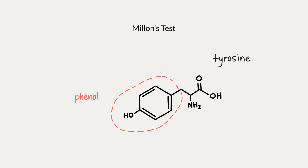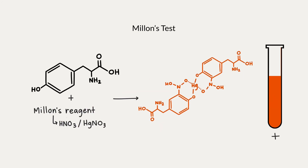Millon's test detects the amino acid tyrosine specifically — the only amino acid containing a phenol ring, which is a hydroxyl group attached to a benzene ring. We use Millon's reagent, a solution of mercuric nitrate in nitric acid. The phenol group is nitrated by nitric acid, and then the nitrated tyrosine forms a complex with mercury ions to produce a brick-red product, indicating a positive test. Since Millon's test isn't specific for proteins, it gives a positive result for any compound containing phenol functional groups, so the Biuret or ninhydrin tests are often used alongside it to confirm protein presence.